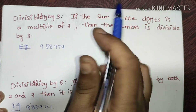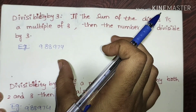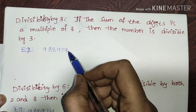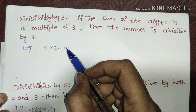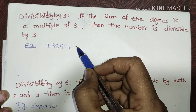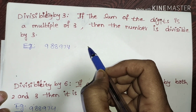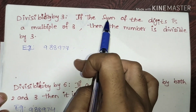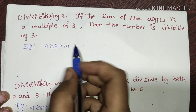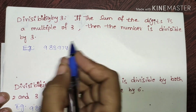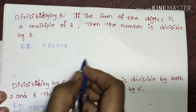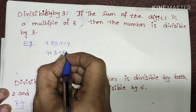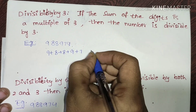Divisibility by 3: the condition is that we take the given number and sum all its digits. If the result is a multiple of 3, then the number is divisible by 3. Let us look at an example. We will add all the digits of the given number.